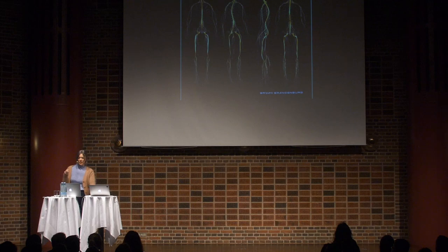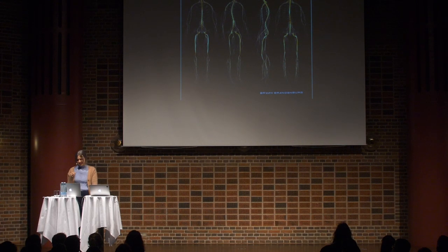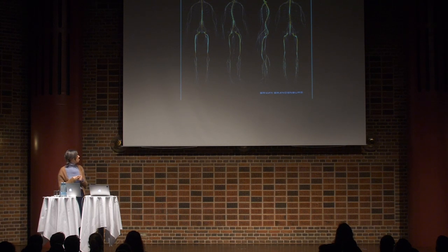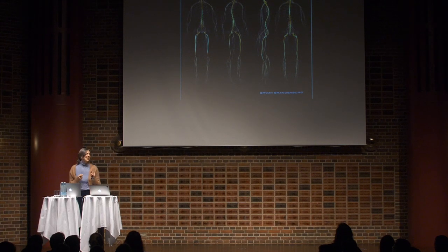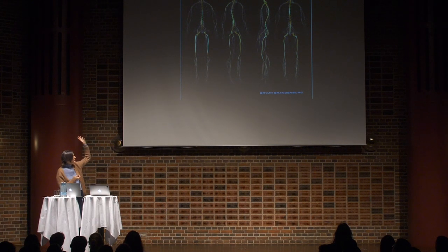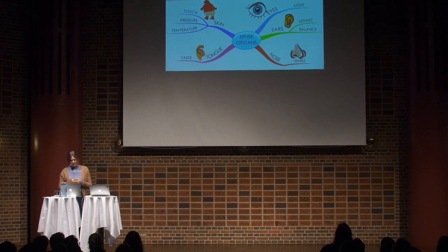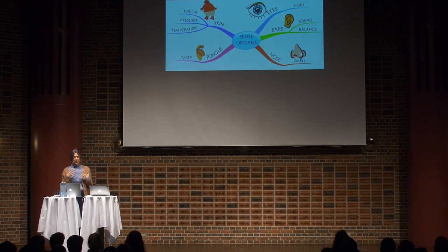When you consider what the brain is — which is often where cognition is located in our current Western sense of cognition and mind — even the brain itself is more distributed in the body than we are conventionally taught about or often think about. Basically, the brain itself would be nothing without the nervous system, which is distributed throughout the whole body. The senses are also highly connected to our bodily experience of the world, and even our concept of what the senses are is expanding.